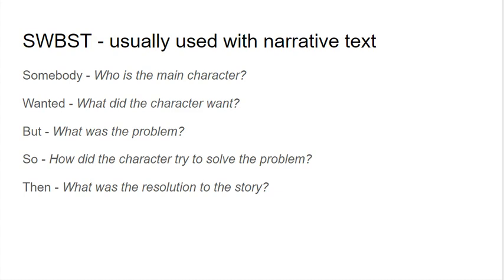When we read a narrative text such as a short story or a novel, we could write SWBST at the top of our paper. This acronym will help us to think through and summarize what exactly happened in the novel. Somebody — who's the main character? Wanted — what did that main character want? But — what was the problem? So — how did the character try to solve the problem? And then — what was the resolution to the story? Remember this acronym when you go to summarize, mainly narrative text.